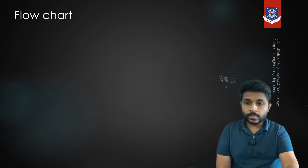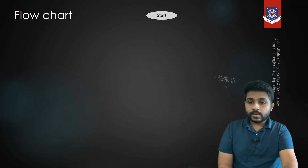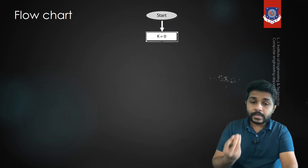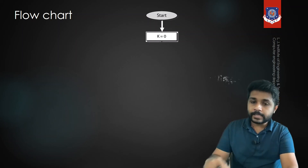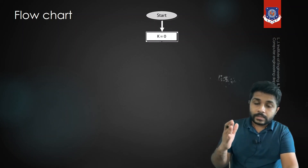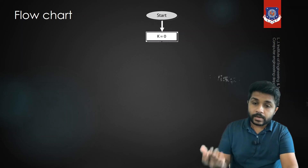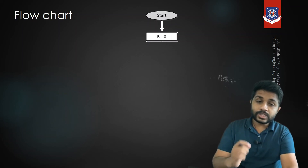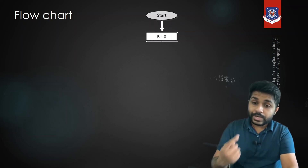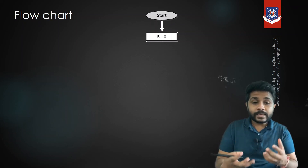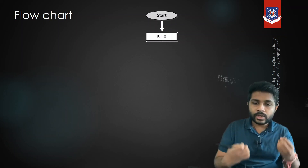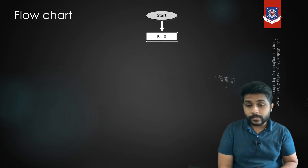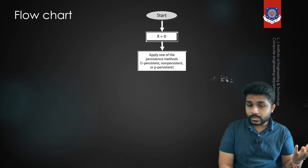Now let's look at the flowchart of CSMA/CD. K is the number of attempts — how many times a sender can retransmit after a collision. Each time the sender detects a collision, it waits and tries again, incrementing K. The number of attempts K is limited for each device; no device can attempt retransmission indefinitely, because doing so would create excessive traffic and increase the probability of further collisions.